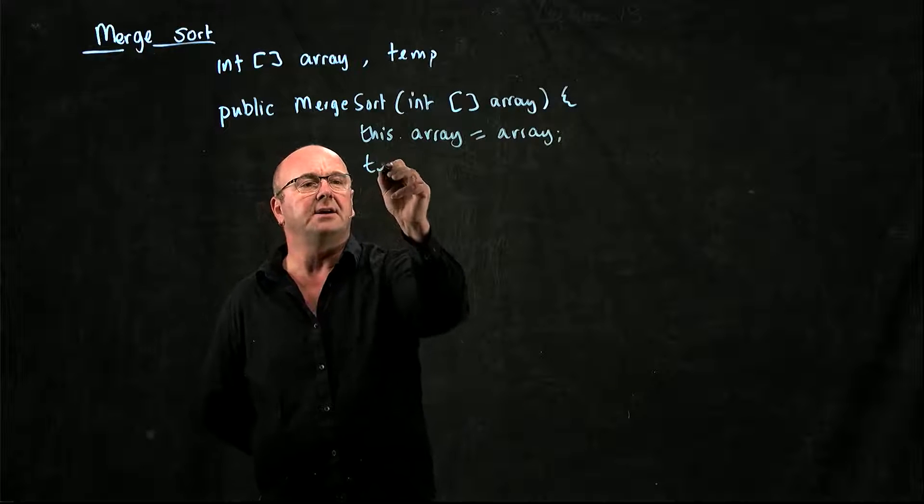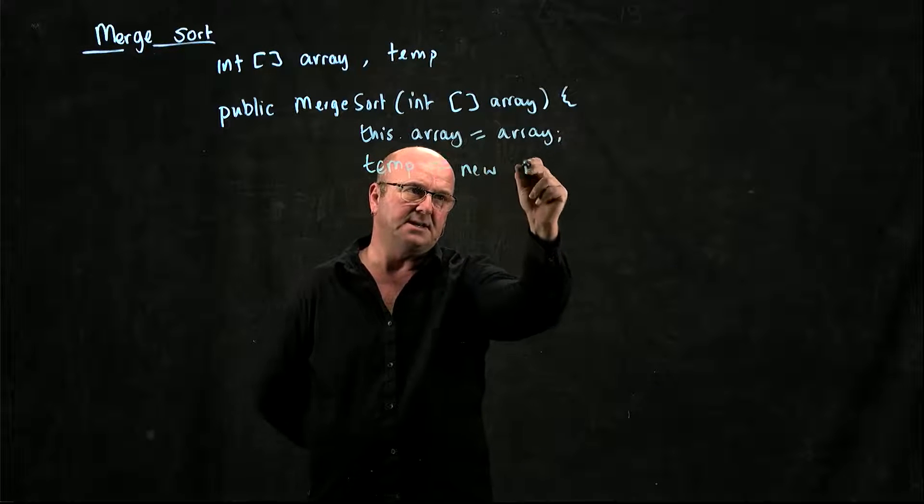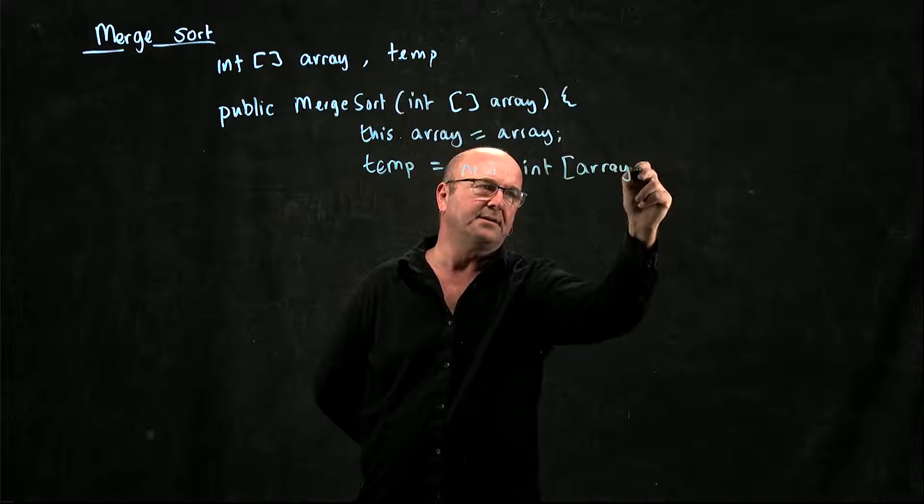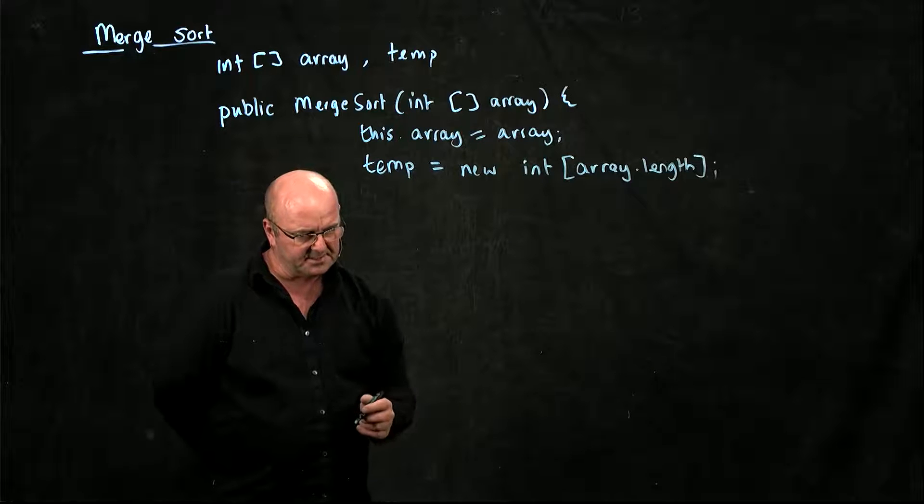And we're going to create a new empty array of the right size, and it's going to be array.length. So that's our empty array that's going to hold our sorted data once we get there.